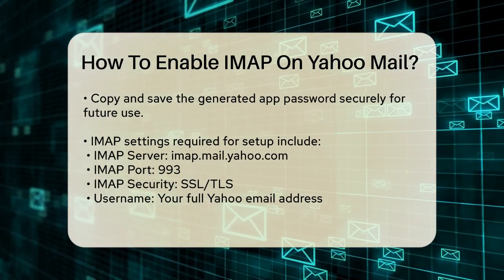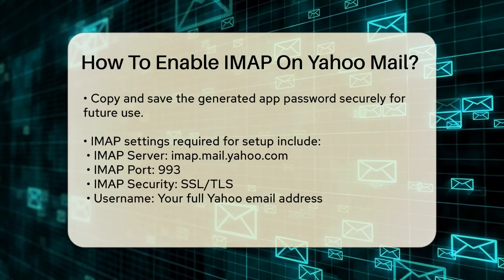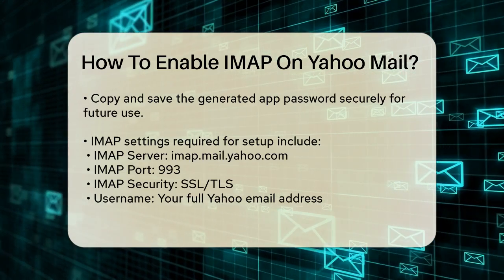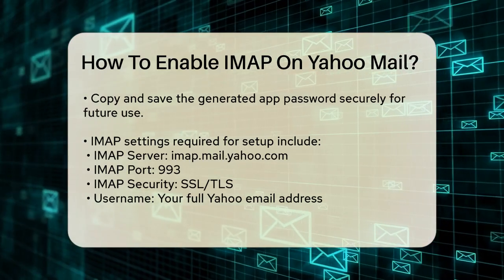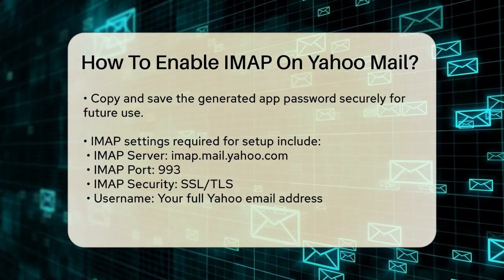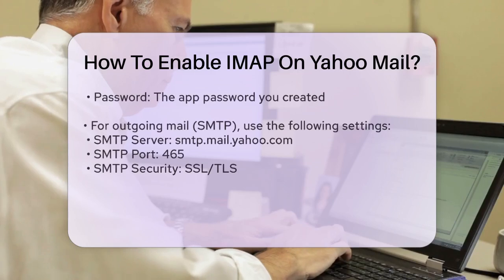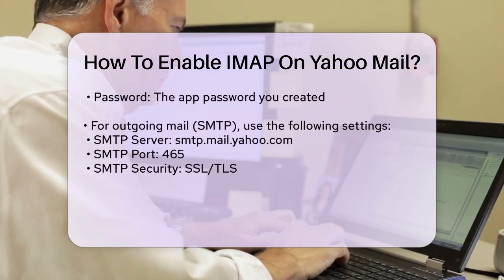Now let's talk about the actual IMAP settings. Here are the details you'll need: IMAP Server: imap.mail.yahoo.com, IMAP Port: 993, IMAP Security: SSL/TLS, Username: your full Yahoo email address, Password: the app password you just generated.